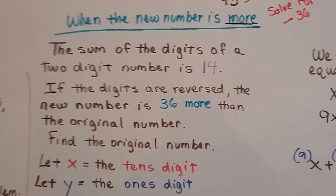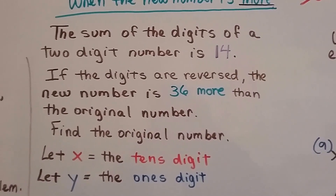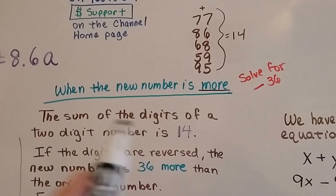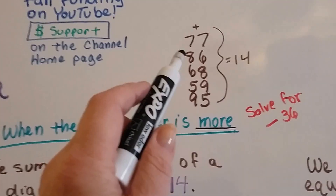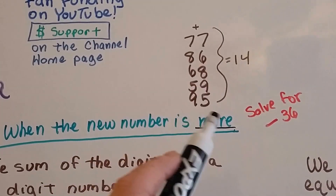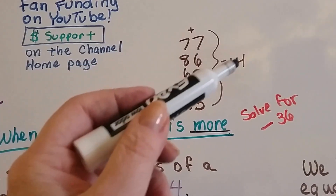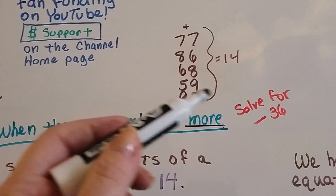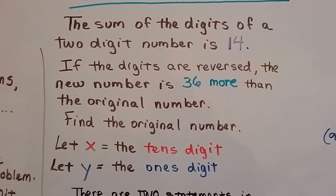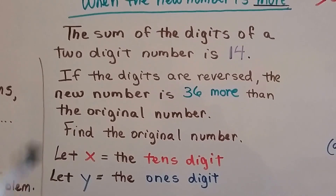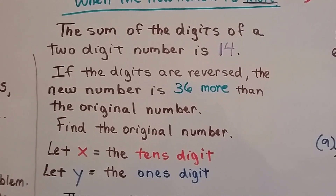The sum of the digits of a two-digit number is 14. What that means is you have a two-digit number — like 77, 86, 68, 59, or 95 — and when you add the tens place and the ones place, like seven plus seven, it's going to equal 14, or eight plus six, or six plus eight, or five plus nine. It's going to equal 14.